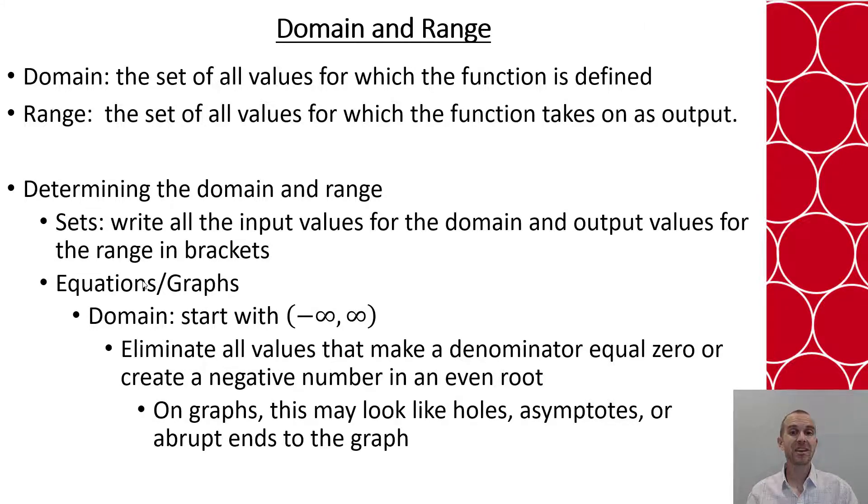If I have an even index radical, just the evens, that has to be greater than or equal to zero, because if my number becomes negative inside the radical then I end up with a complex number or an imaginary number which can't be graphed on the real coordinate plane. And then if I graphed it those will look like holes, asymptotes, or even a stop in the graph in one direction or another. In that domain we often will write in interval notation so we'll look at some examples to help us with that.